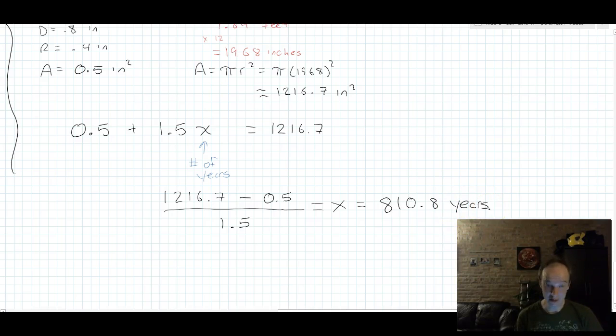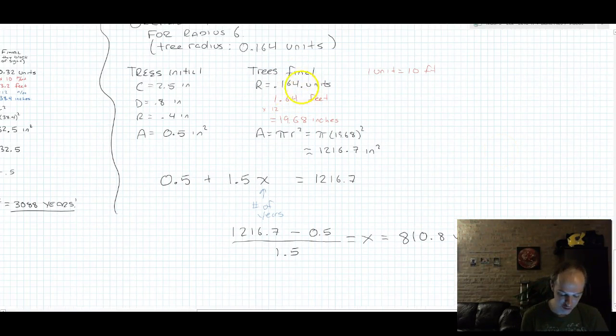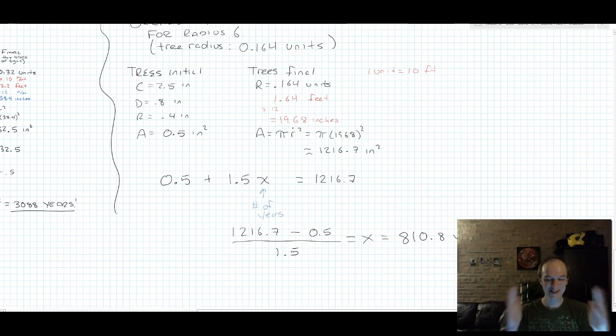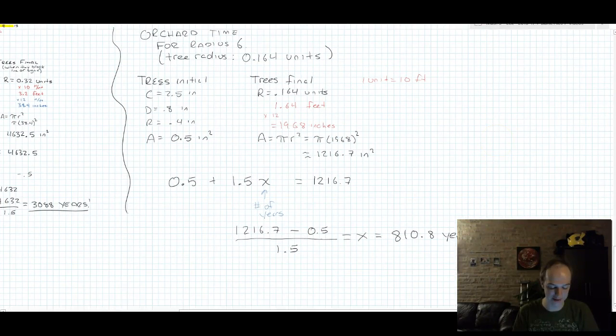That's still a lot of years. These are still pretty big trees. 0.164 times 10 is 1.64 feet, times 12 is 19 inches radius. That's almost two feet, that's a foot and a half. That's a pretty big tree. So it could feasibly take 800 years for a tree to grow to that size.